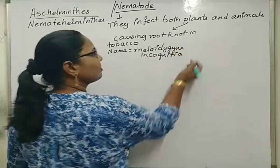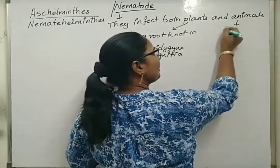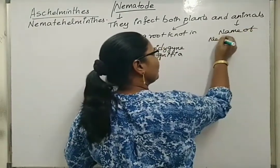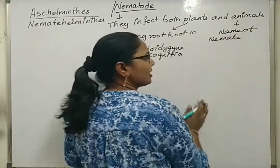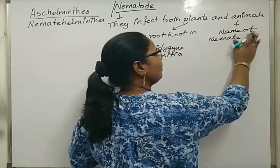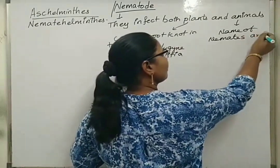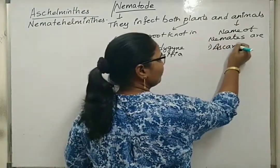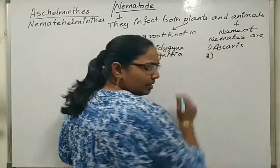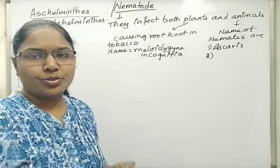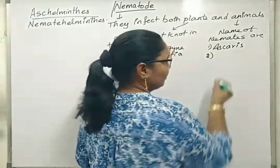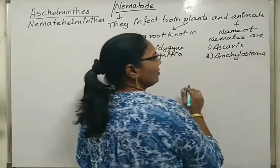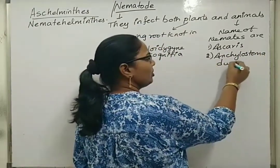The type of nematode that infects animals: the first one is Ascaris. The second one is Ankylostoma, which is also called as hookworm — the complete name being Ankylostoma duodenale.